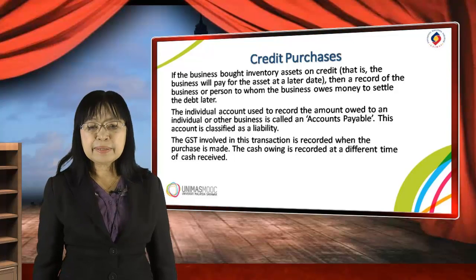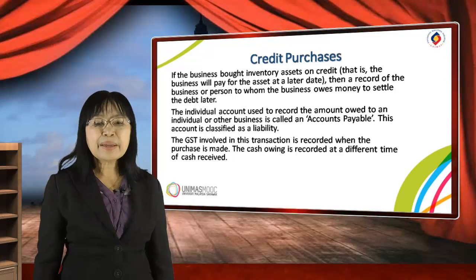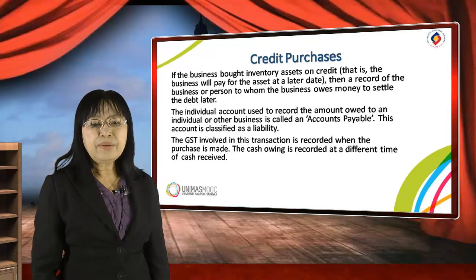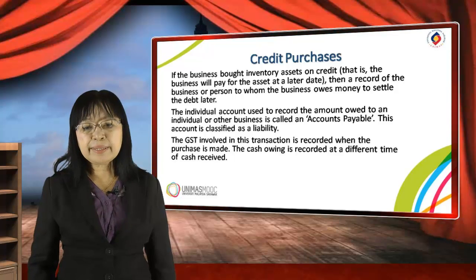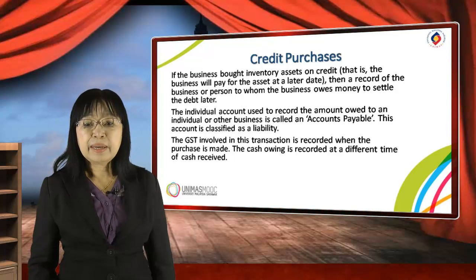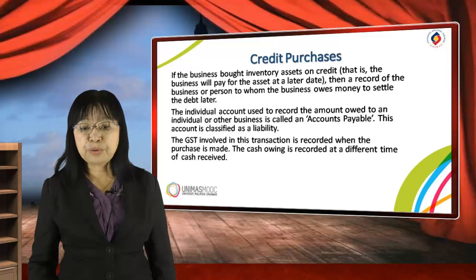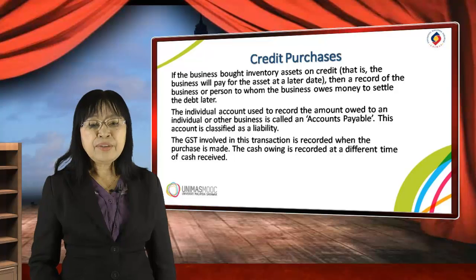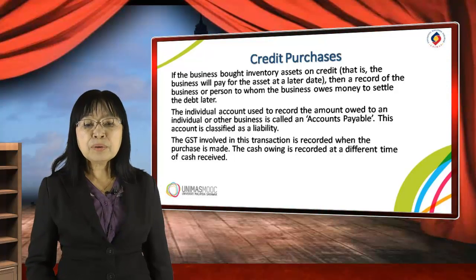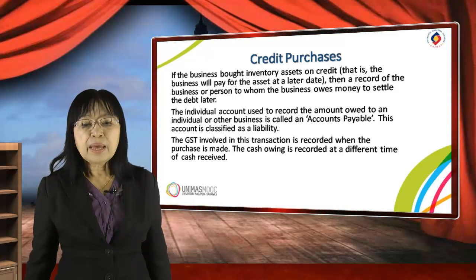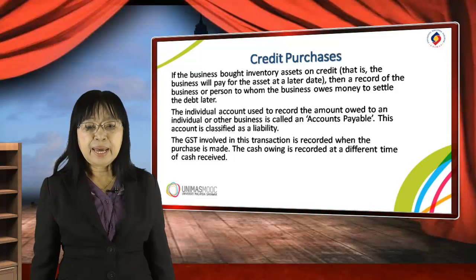Let me talk about business credit transactions. Let's start with credit purchases. Credit purchases means purchasing inventory or services on credit. If the business bought inventory or assets on credit, that means the business will pay for the asset at a later date. The individual account used to record amounts owed to an individual or other business is called an accounts payable account, which is classified as a liability.